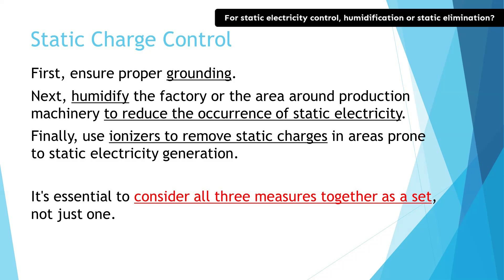What should we do to deal with static electricity? First of all, grounding is essential — if you don't do this, nothing will start. Next, let's create an environment where static electricity is not easily generated by humidifying the entire plant or the area around the production machines. Then, for areas where static electricity is still likely to occur, use ionizers to eliminate static electricity. Without considering this three-step approach, relying only on humidification would not eliminate the static charge before moving to the next process. Similarly, if you solely depend on ionizers, you'll need an impractical number of them.